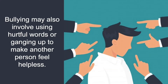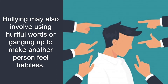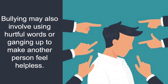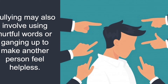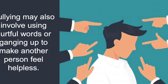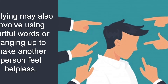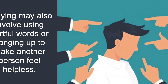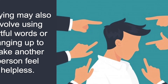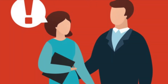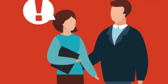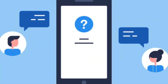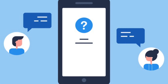Bullying can involve using hurtful words or ganging up to make another person feel helpless. This includes teasing people in a mean way, getting certain people to gang up on others, and intimidating or giving threats through looks or gestures. This can happen face-to-face or through the phone, whether it be a single incident or a series of incidents.